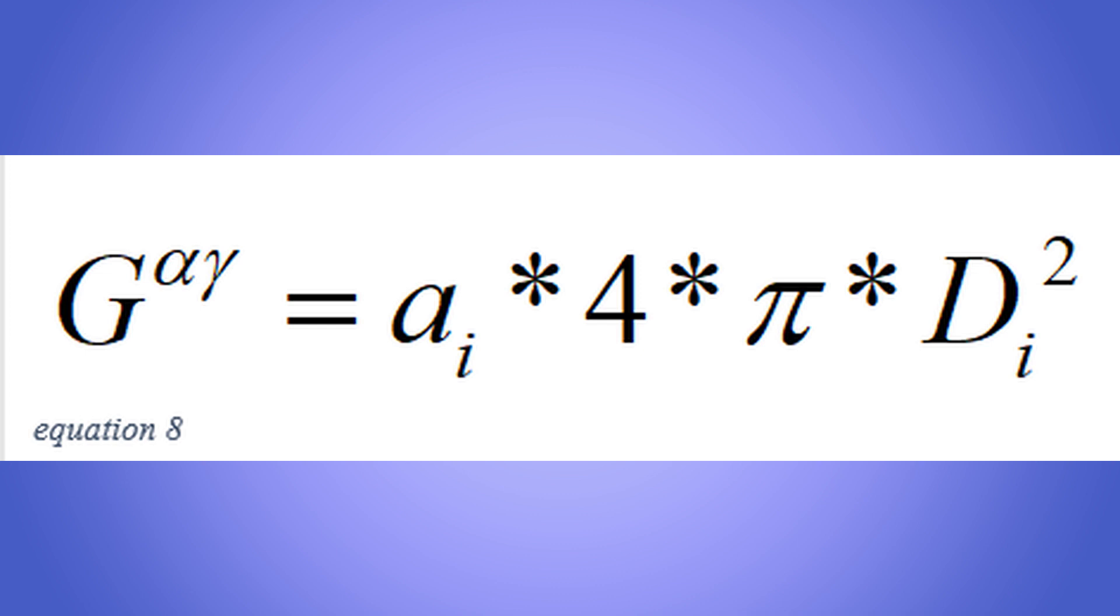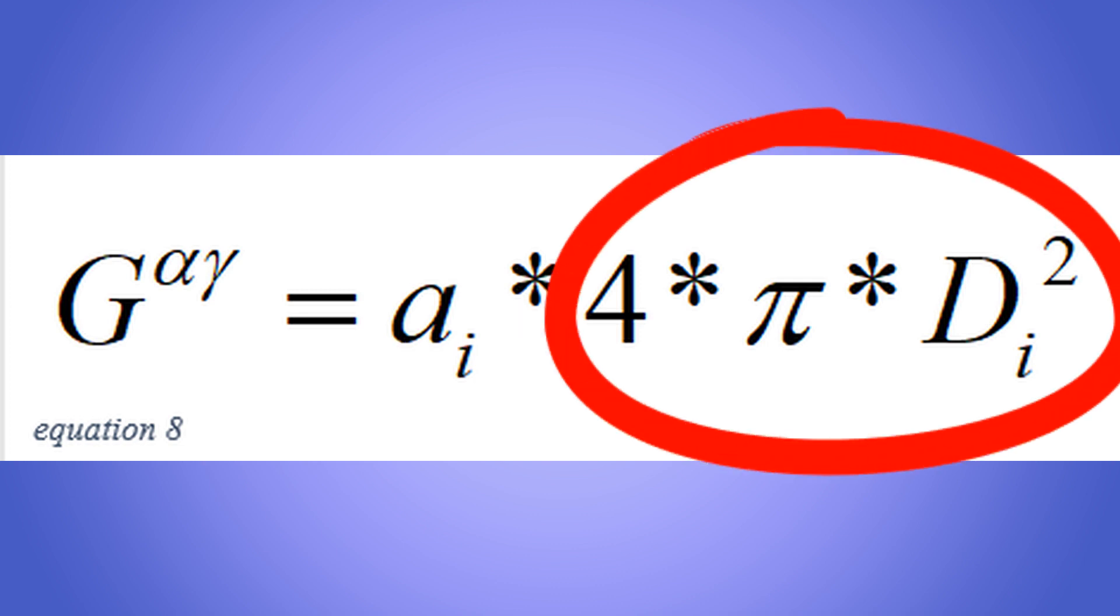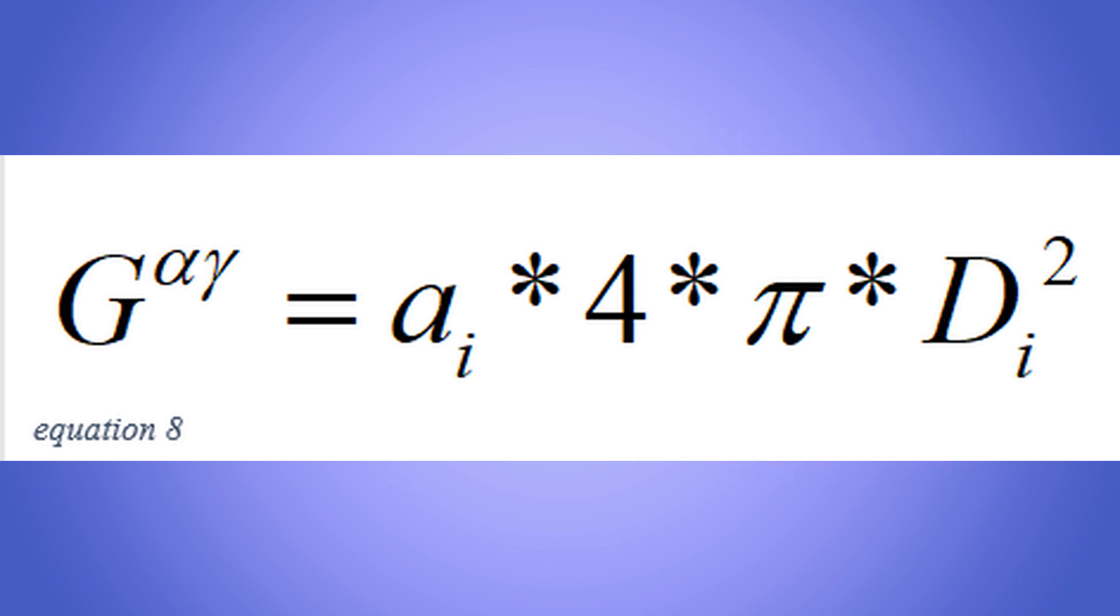This means G alpha gamma, the Einstein tensor, equals the outward acceleration times the surface area of the mass, the central mass. Equation 8.